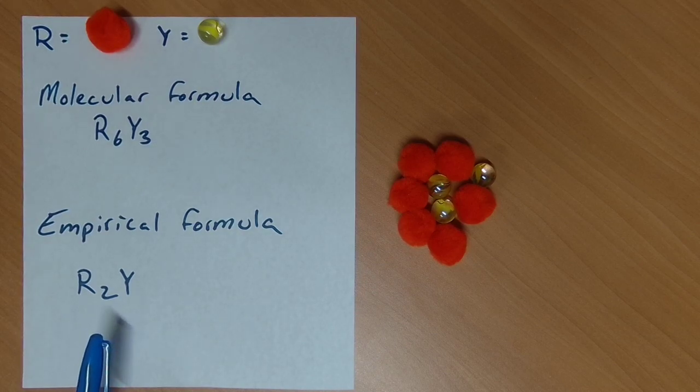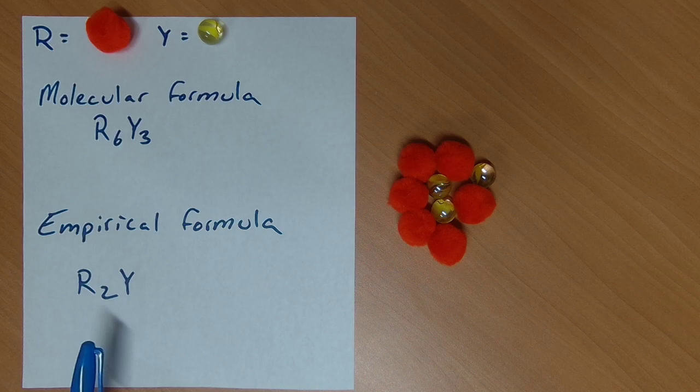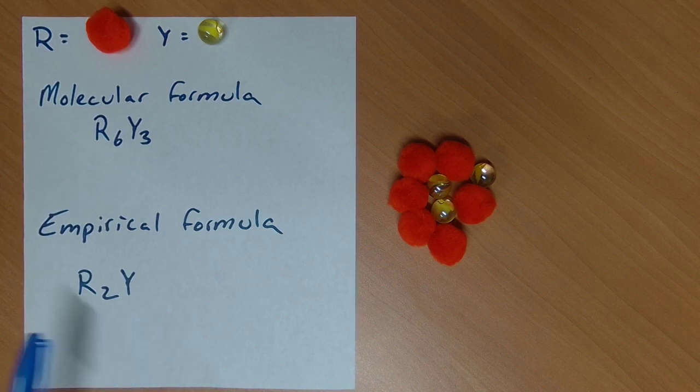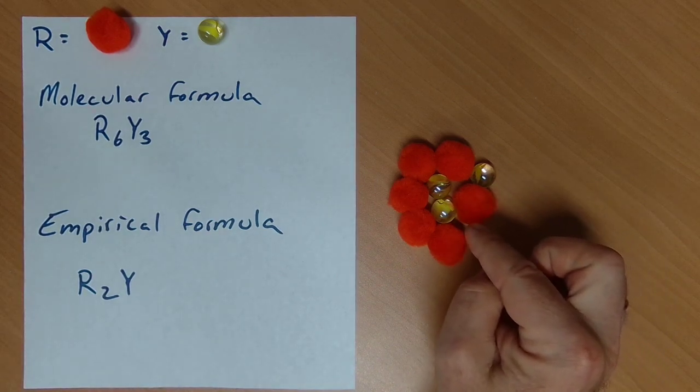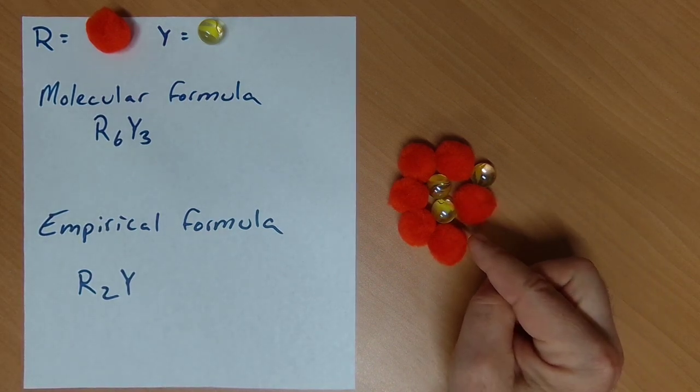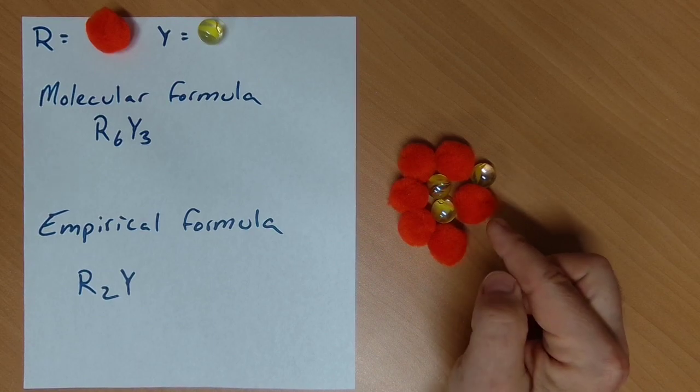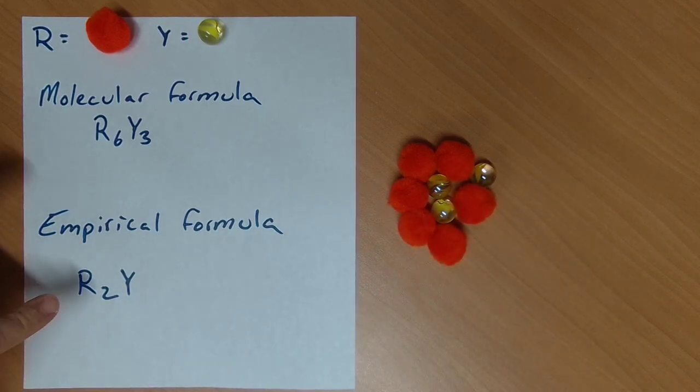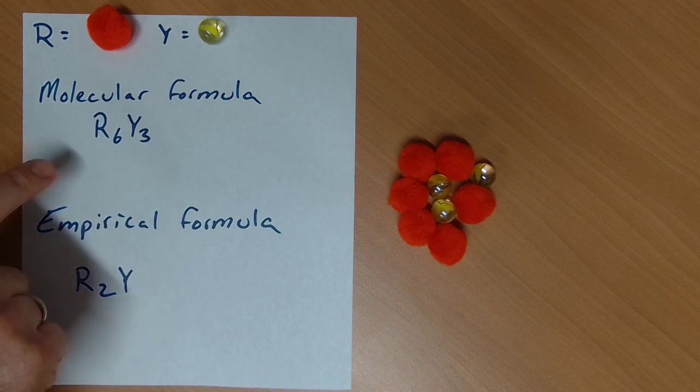And what we're about to do is we're about to take a look at problems where I would be given some information about mass, and I want to find this empirical formula here. So the reality is, as chemists, we really need to do a lot of our work with numbers of things. So these are useful to us.